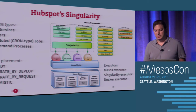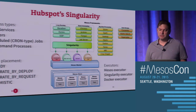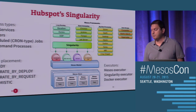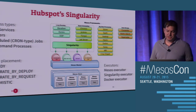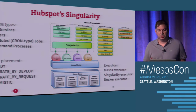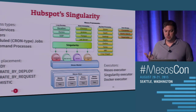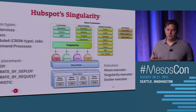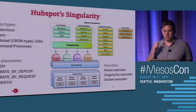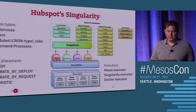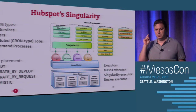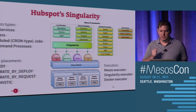In a snapshot, this is what HubSpot Singularity is. It provides four service process types: web services, where you get a hold on an IP and a port; workers, where you don't get a port and it's just for running daemons; scheduled jobs, with cron-type syntax for recurrent job execution; and on-demand processes, where you have the definition of the process and trigger execution from outside the scheduler whenever you want.